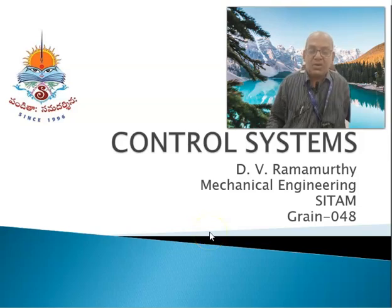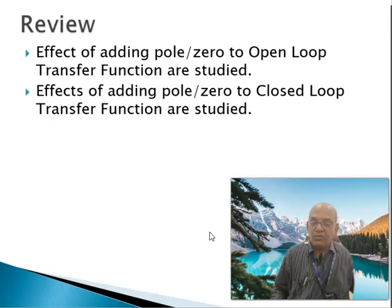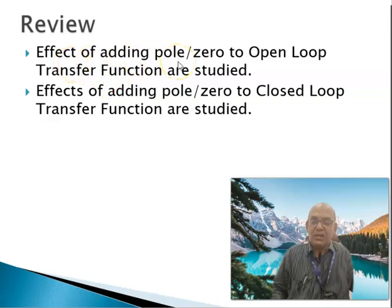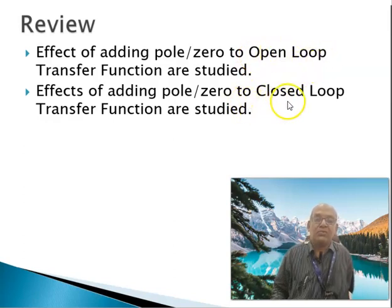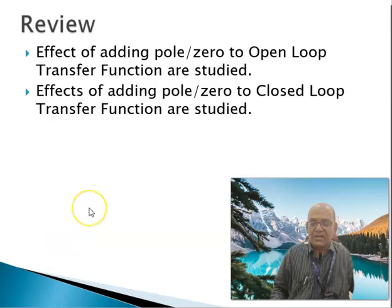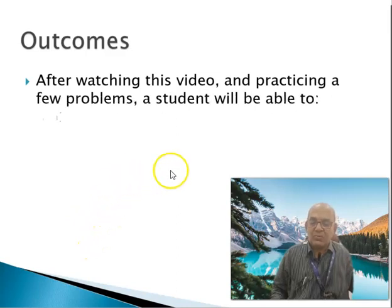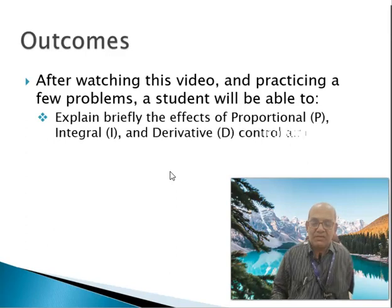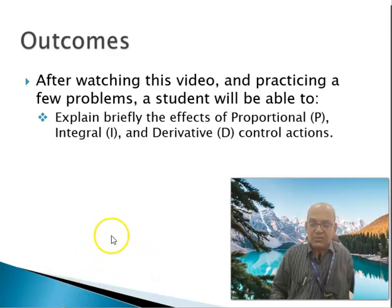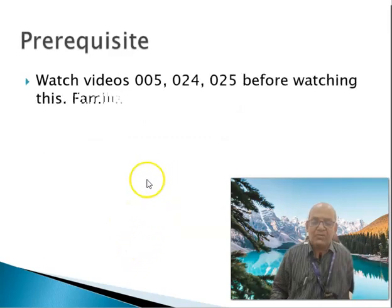Hello and welcome back to this video series on control systems. Over the past few videos we have seen the root locus method, how it is useful in detecting and improving stability of a system, and we have also seen the effect of adding a pole or zero to an open loop system and to a closed loop system. We'll go ahead with this study in a slightly different perspective — studying the effect of proportional, integral, and derivative action, and of course combinations PI, PD, and PID.